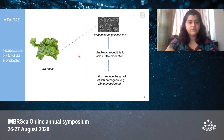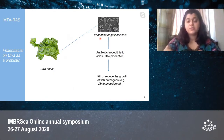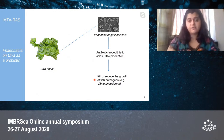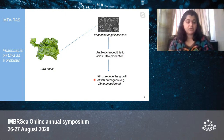Some beneficial bacteria have been found on the surface of Ulva, namely from the genus Phaeobacter. Phaeobacter gallaeciensis, which was previously isolated from another species of Ulva — Ulva rigida — was found to be able to colonize the surface of Ulva ohnoi. Phaeobacter gallaeciensis can also produce tropodithietic acid, TDA, which is an antibiotic that kills or reduces the growth of fish pathogens like Vibrio anguillarum, one of the most common bacteria that infects fish in aquaculture. So culturing Ulva ohnoi with a Phaeobacter gallaeciensis biofilm as a biofilter in IMTA-RAS could, through a probiotic effect, reduce our reliance on antibiotics and reduce aquaculture fish pathogens.